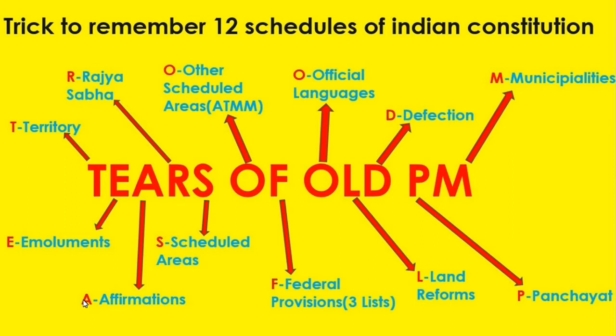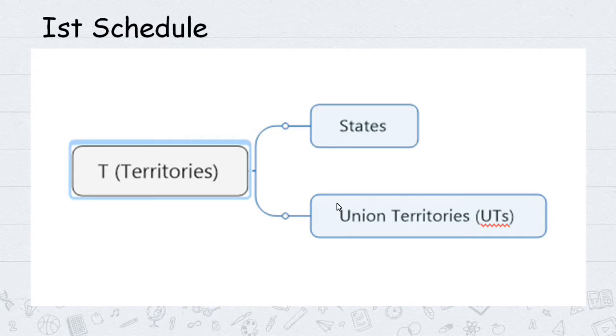The original Constitution adopted on 26 November 1949 had schedules one through eight. Schedules nine, ten, eleven, and twelve were added after the adoption of the Constitution. The First Schedule deals with territories - all States and Union Territories.